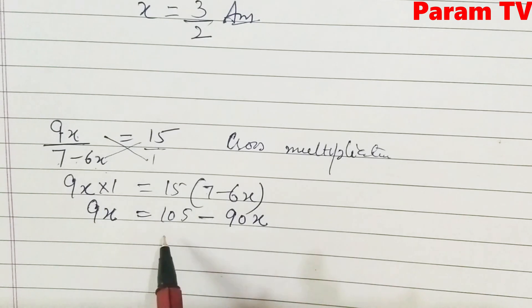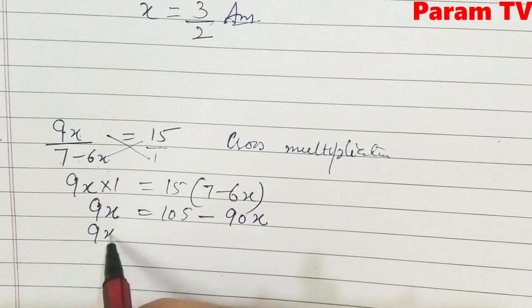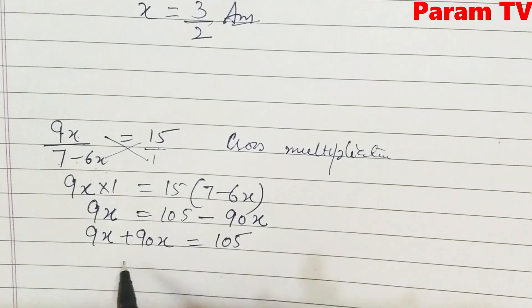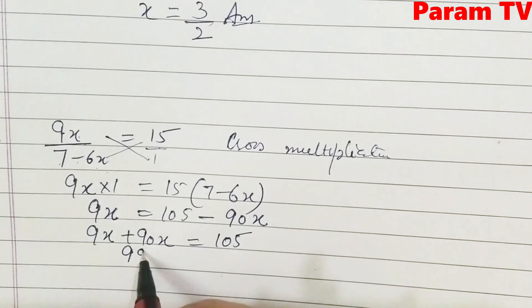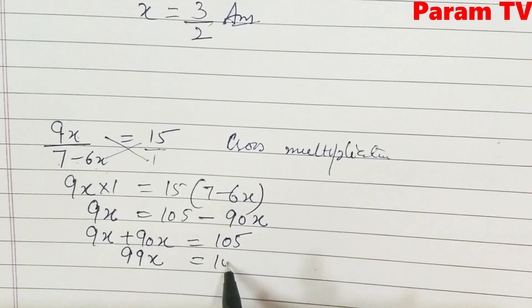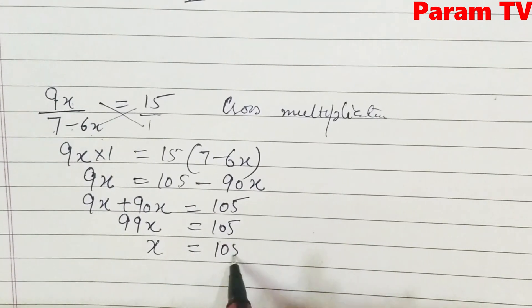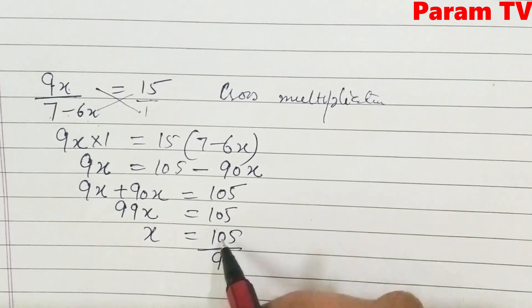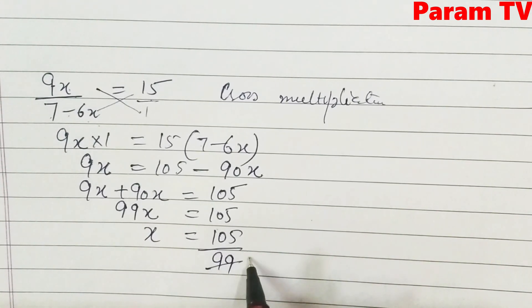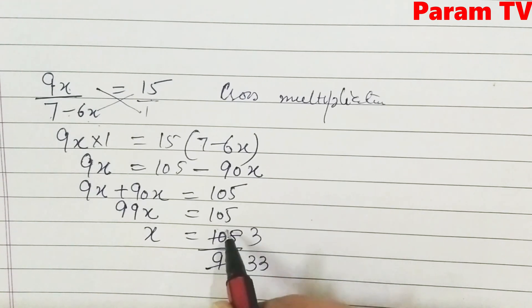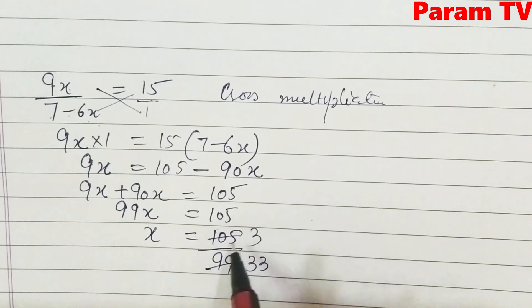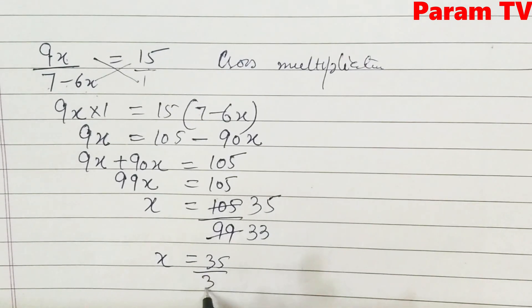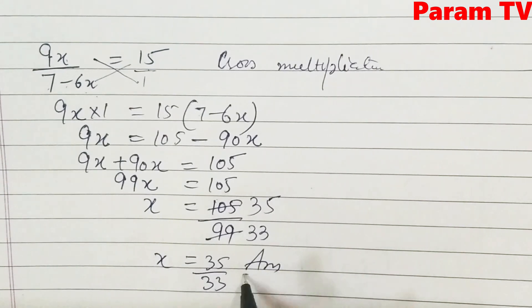Now transpose the terms: 9x + 90x = 105, so 99x = 105. Therefore x = 105/99. Cancelling by 3: x = 35/33. This is the answer.